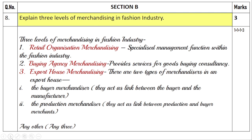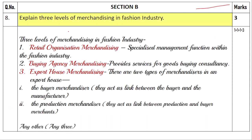One question has an internal choice. Question number seven we have already done — you can find the link here. Question number eight: explain three levels of merchandising in the fashion industry. They have asked for three levels, each carrying one mark, meaning you need to give a short explanation of about two to three lines for each level. The three levels of merchandising in the fashion industry are retail organization merchandising, buying agency merchandising, and export house merchandising.